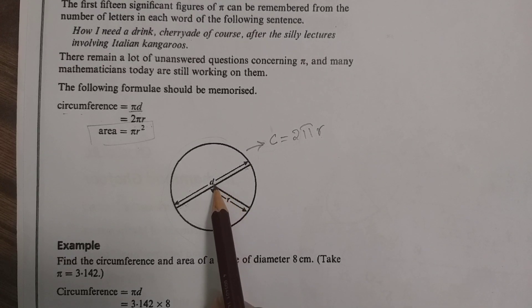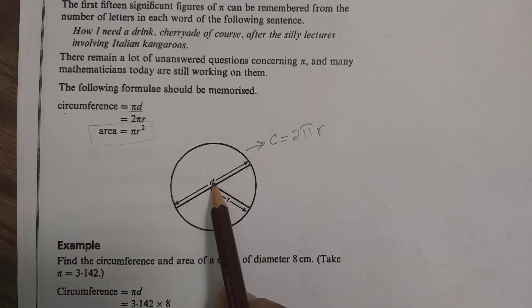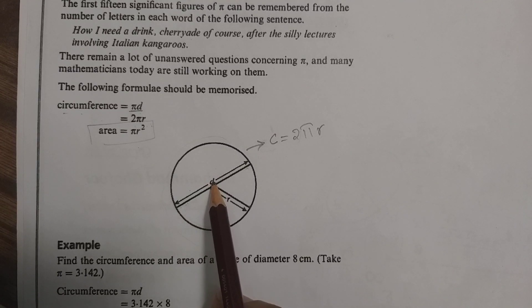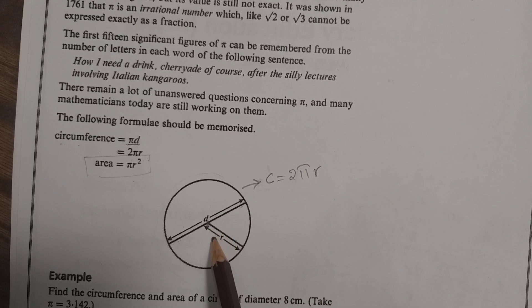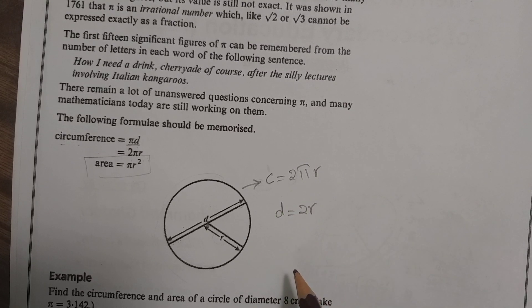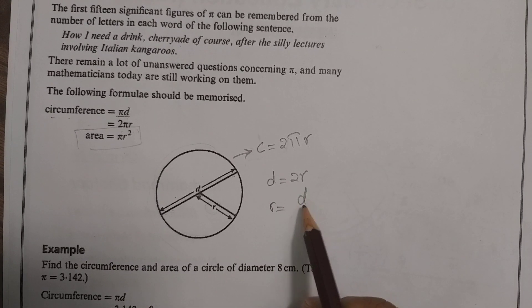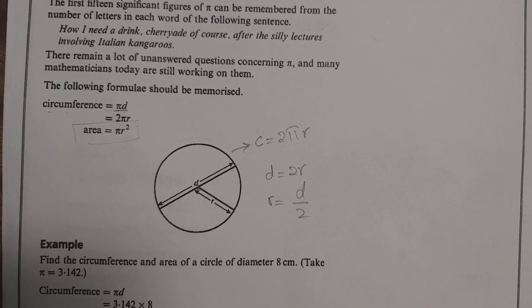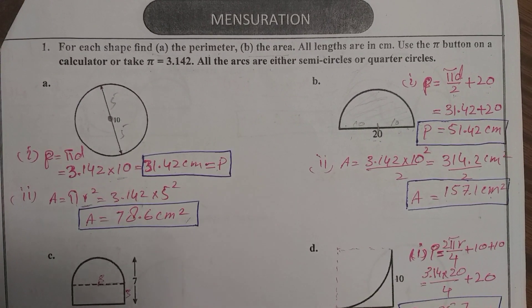If we multiply the radius by 2 it becomes the diameter. The diameter is the line which touches two points of the circle and passes through the center. So d equals 2r, or equivalently r equals d divided by 2. Now let's look at questions about the circle.